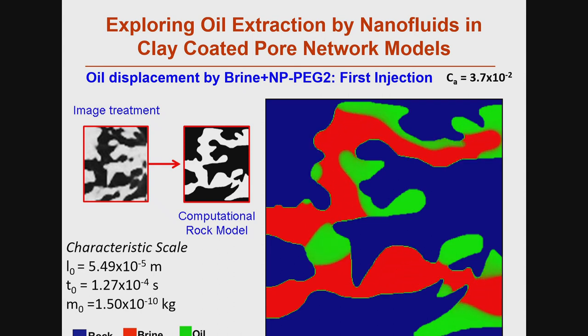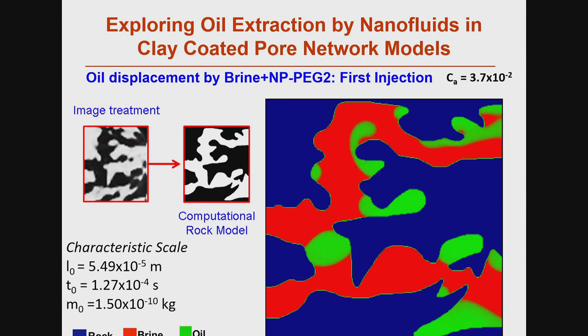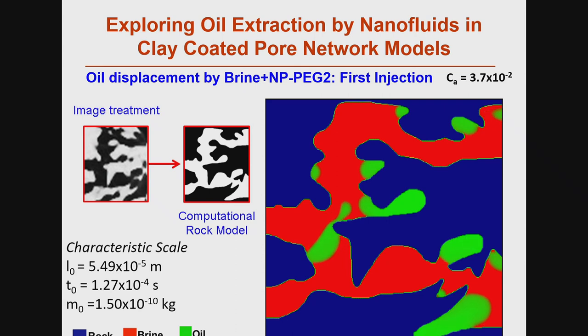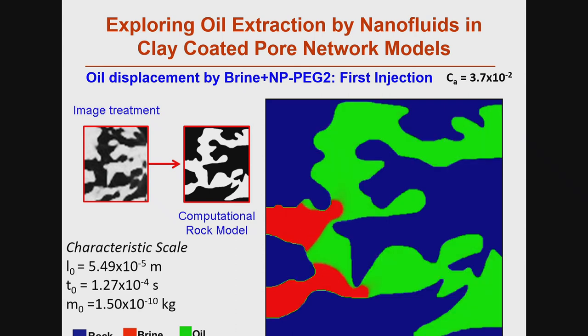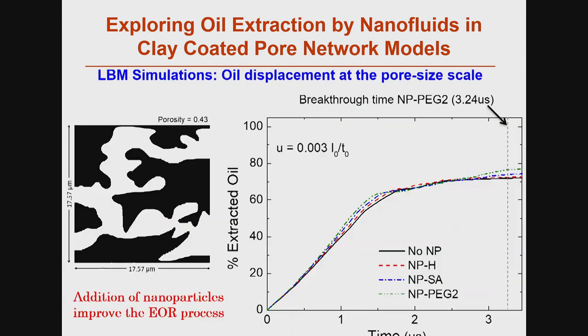We started with microphotography of the rock, built a computational rock model, and used it to see how much of the trapped oil can be displaced when a solution is injected. This Lattice-Boltzmann calculation has the fluid properties embedded from molecular dynamics, where the force fields were derived from first principles. This is the injection: in green, you see the oil being displaced. This kind of simulation is typically done qualitatively, but here it is parameterized from first principles.